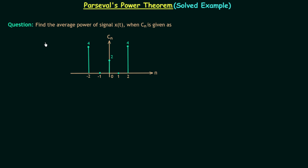In this question we are required to calculate the average power of signal x(t) when c_n is given as the plot you can see in the question. So c_n is the coefficient of signal x(t) and we are required to calculate the average power of signal x(t) using the plot of c_n given in the question.